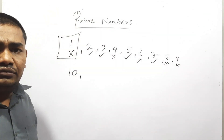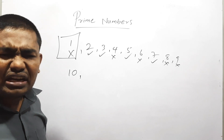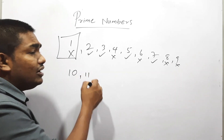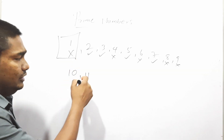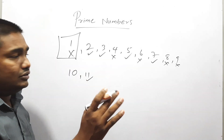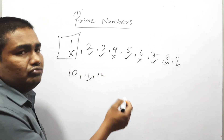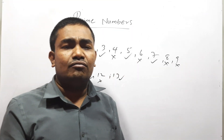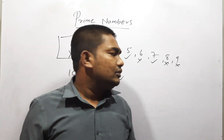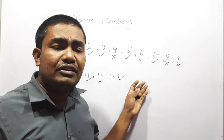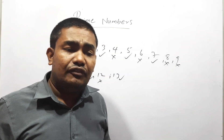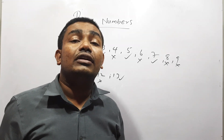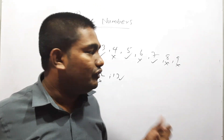Ten is not a prime number — there are four factors. Eleven is a prime number; you can divide that by 11 and 1 only. Twelve is not a prime number. Thirteen — yes, thirteen is a prime number. Like this, if someone gives any number, we can check whether that is a prime number or not. This is the way we are finding it — there should be only two factors, or we can divide by one and itself only — that is a prime number.